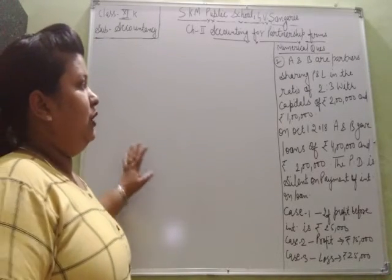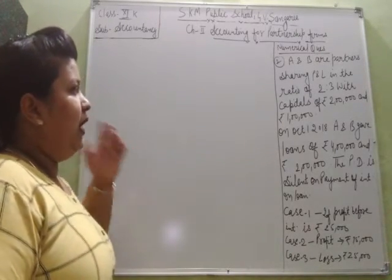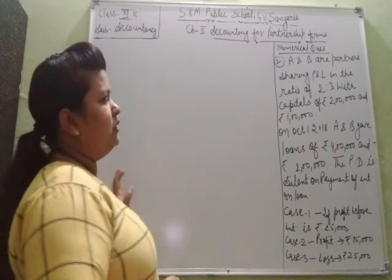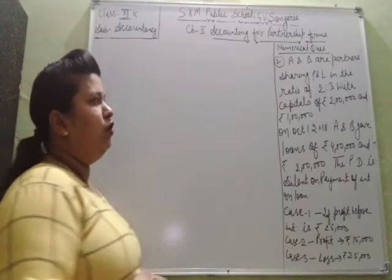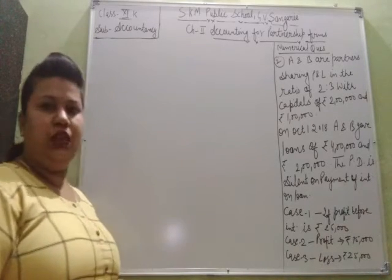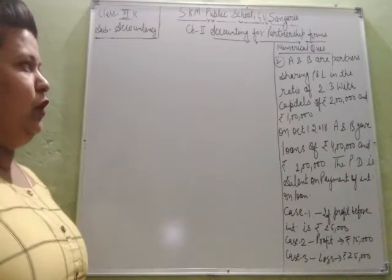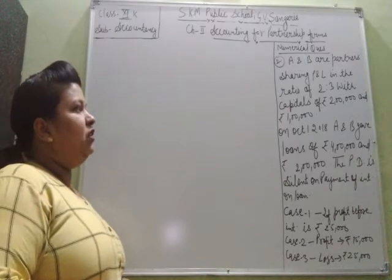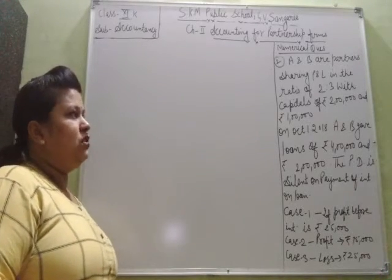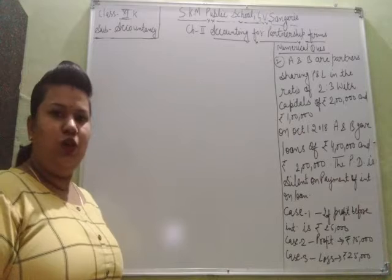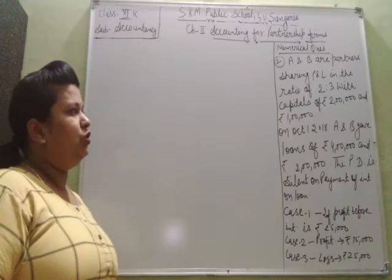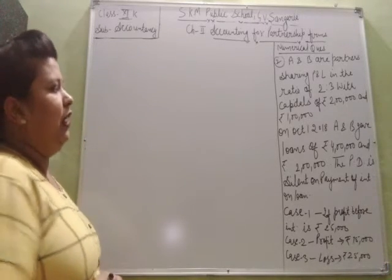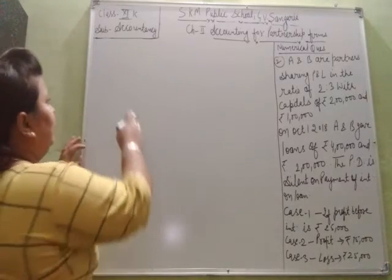There is a question: A and B are partners sharing profits and losses in the ratio of 2:3, with capitals of Rs 2 lakh and Rs 1 lakh respectively.